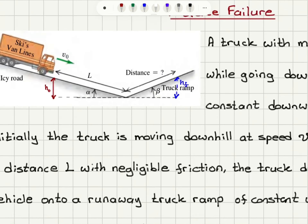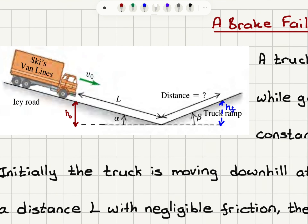I labeled the initial distance from the ground level h0, and the final distance with respect to the ground level is h_final. The distance the truck travels down the icy road is l, and the distance the truck travels up the truck ramp I'm going to call delta_r.